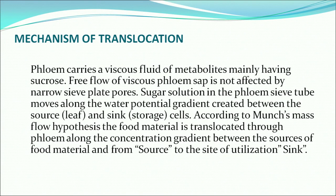Mechanism of translocation: phloem carries a viscous fluid of metabolites mainly having sucrose. Free flow of viscous phloem sap is not affected by narrow sieve plates. Sugar solution in the phloem sieve tubes moves along the water potential gradient created between the source — the leaf — and the sink storage cells. According to Munch's mass flow hypothesis, food material is translocated through phloem along the concentration gradient from the source of food material to the site of utilization — the sink.